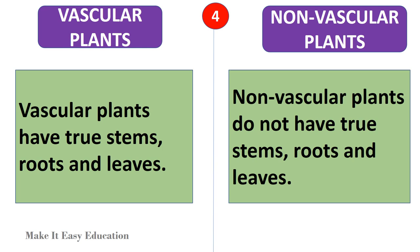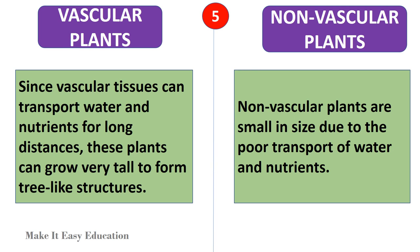Vascular plants have true stems, roots, and leaves; non-vascular plants do not have true stems, roots, and leaves. Since vascular tissues can transport water and nutrients for long distances, vascular plants can grow very tall to form tree-like structures. Non-vascular plants are small in size due to the poor transport of water and nutrients.